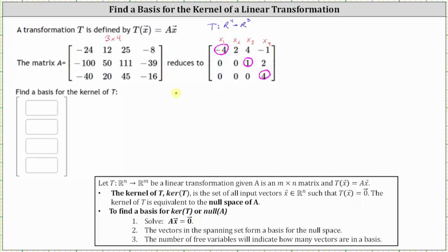So the first row indicates that negative four x one plus two x two plus four x three minus x four equals zero. The second row indicates that x three plus two x four equals zero. The third row indicates four x four equals zero. And because x two is a free variable, we have x two equals x two.